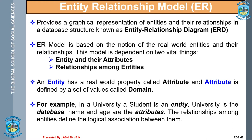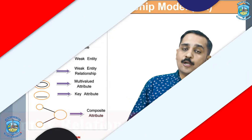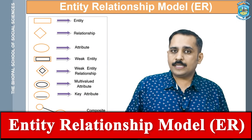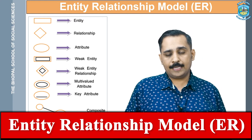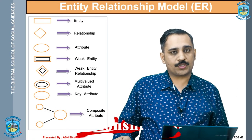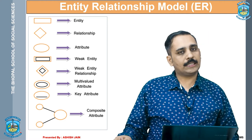For example, in a university we have students — student is an entity because it is a real world object. Here, university is the database, and name, age, etc. are the properties of the student, so they are called attributes. The relationship among entities defines the logical association between them.